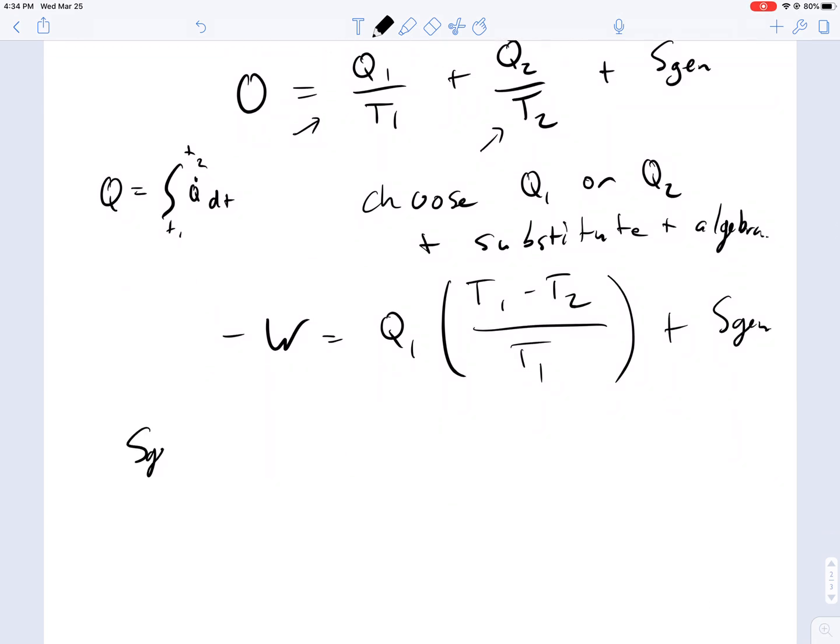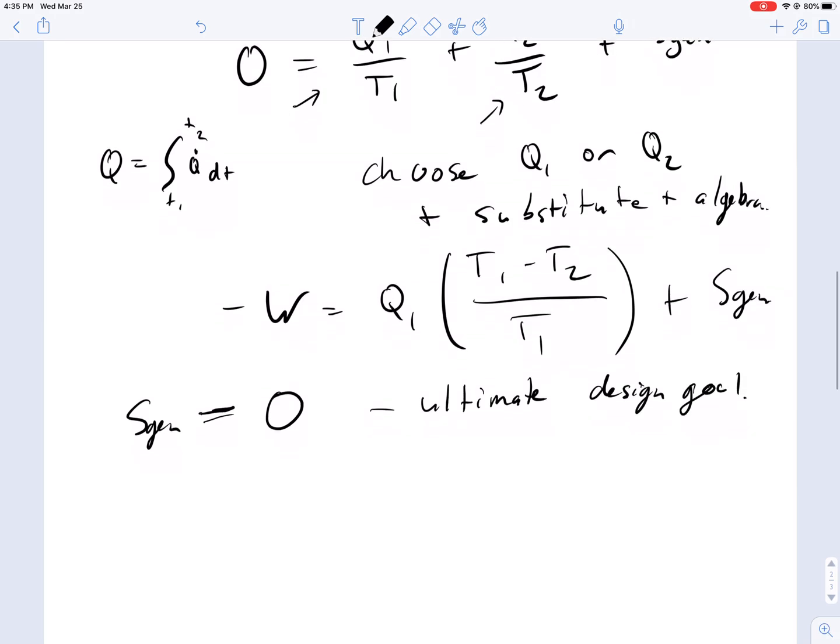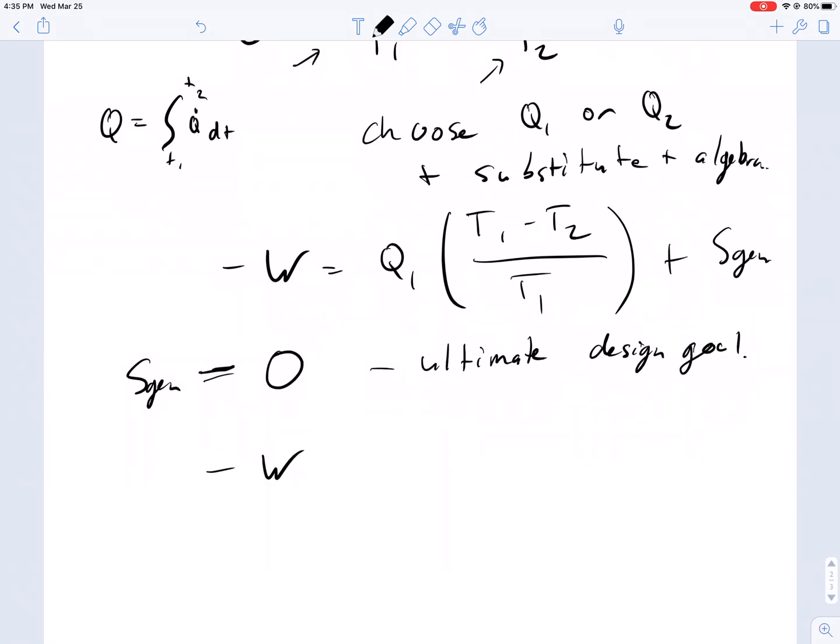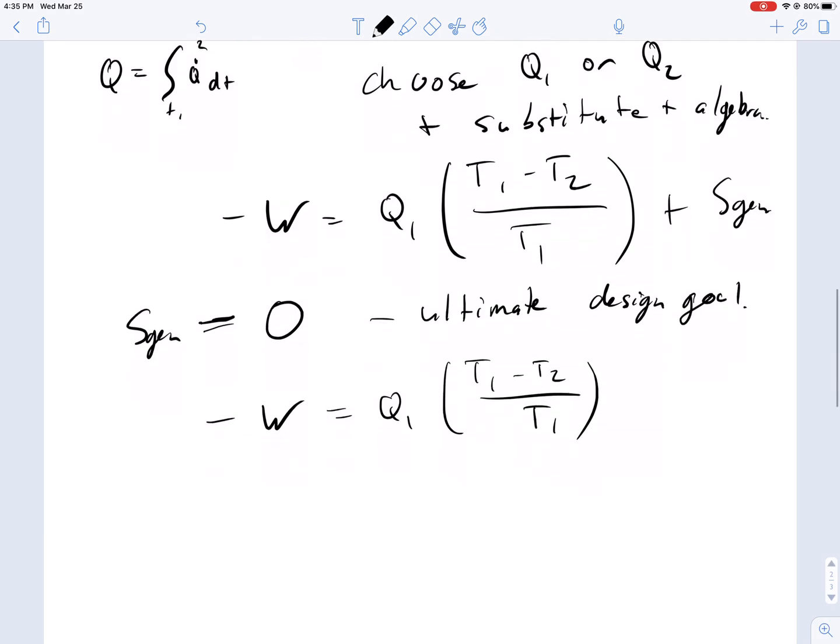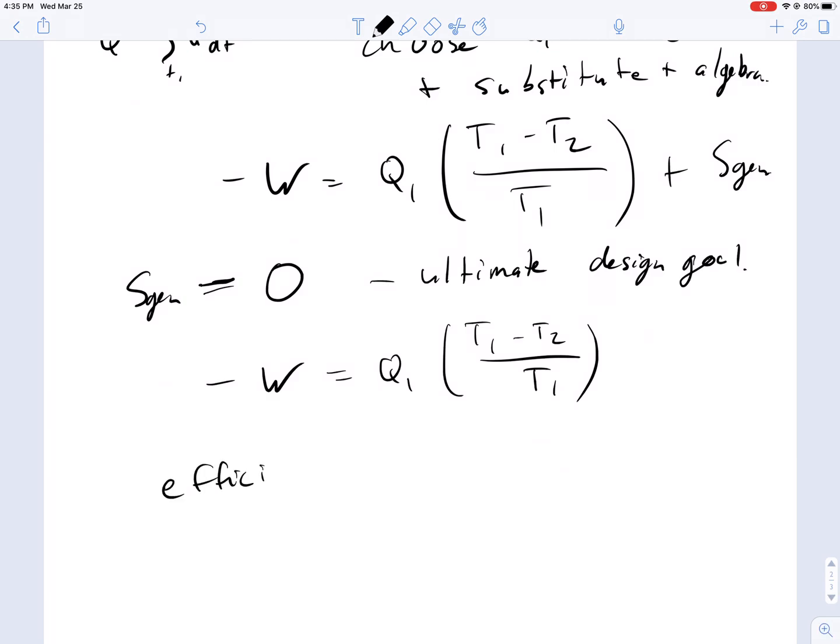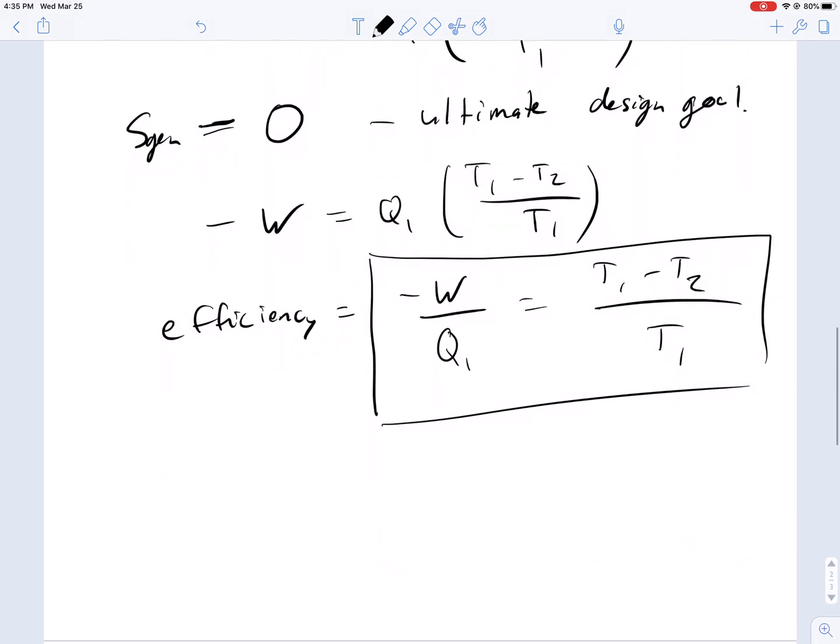We know that the most efficient engine occurs when we have no internal gradients. Everything is at equilibrium, and so this is the ultimate design goal of S gen equals zero. With ultimate design goal of S gen equals zero, we have minus W, which is the work done by the system on the surroundings, is equal to Q1 times T1 minus T2 over T1. Or the efficiency is going to be equal to the amount of work that you get per amount of input of energy, and this is going to be equal to the temperature difference between your thermal reservoirs. This is the absolute best possible engine.